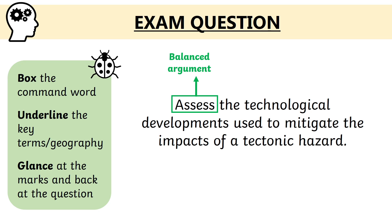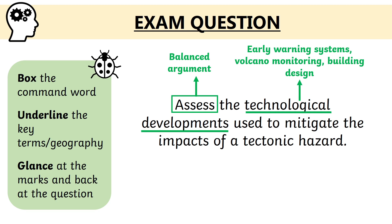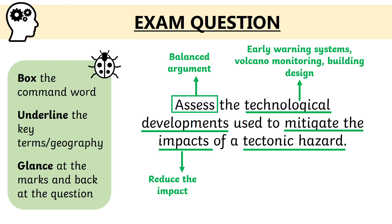We can then examine what the key words are. Technological developments is another way of saying technology used. We know that early warning systems, volcano monitoring and building design are all technologies used to mitigate tectonic hazards. Mitigate refers to reducing the impact, such as lowering death toll or stopping the destruction of infrastructure, such as buildings. Tectonic hazard can refer to either volcanoes, earthquakes or their secondary hazards such as tsunamis.